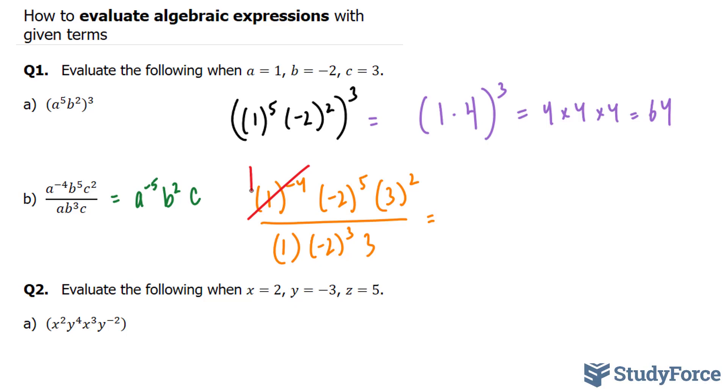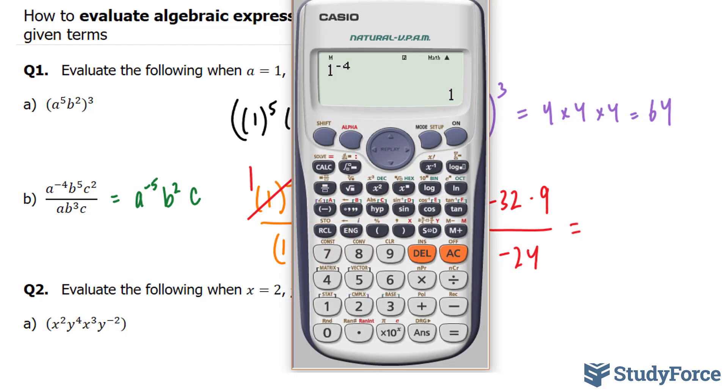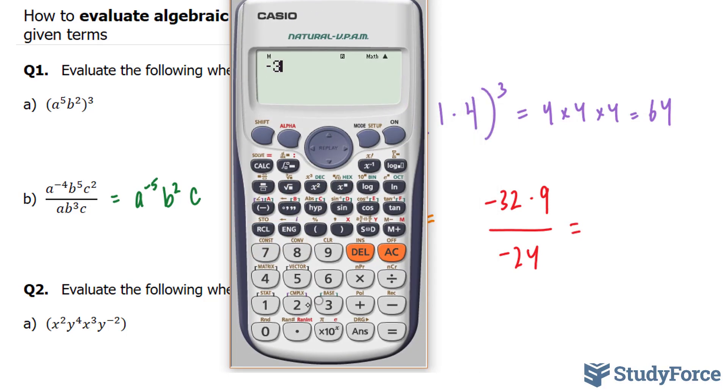Negative 2 to the power of 5 will be negative 32. And you can confirm that with your calculator. And 3 to the power of 2 is 9. Over at the bottom, we have 1 times negative 2 to the power of 3, which is going to equal to negative 8 times 3. That's negative 24. And we're going to use our calculator for this, where we end up with negative 32 times 9 divided by negative 24, which gives us 12.